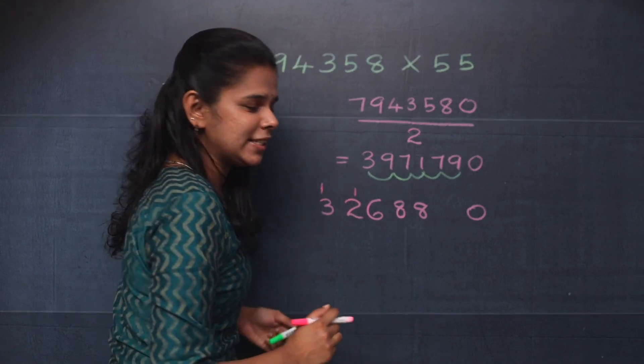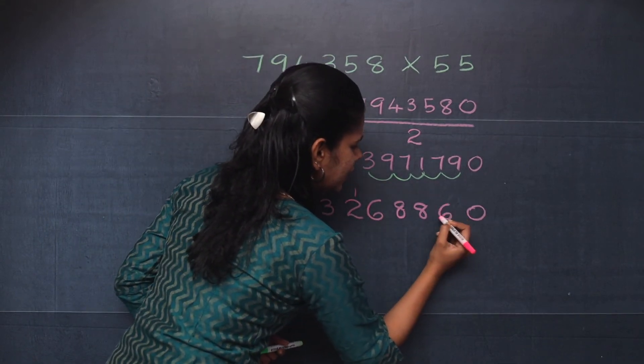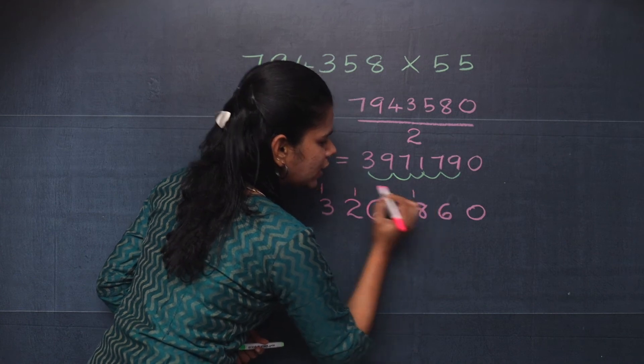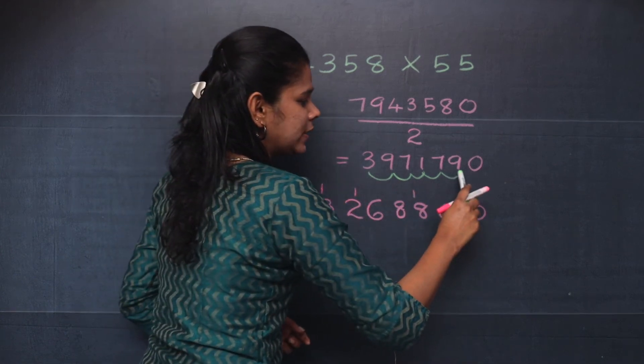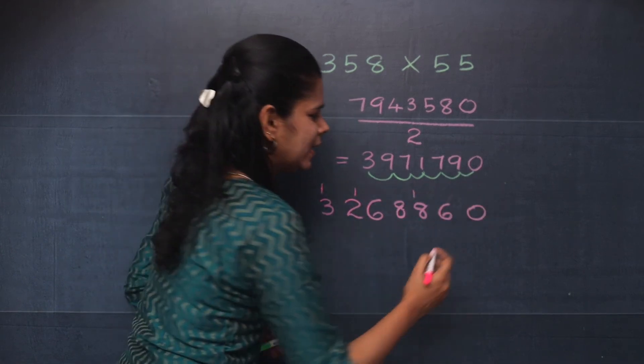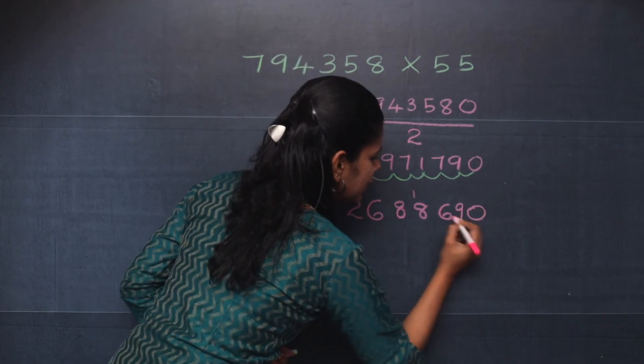Now what is 7 plus 9? It is 16. So you will write 6 here and that carry over 1 here. Now what is 9 plus 0? It is 9. You will write it here.